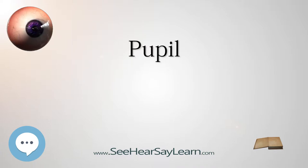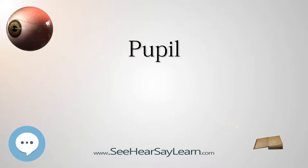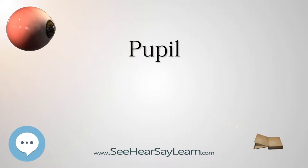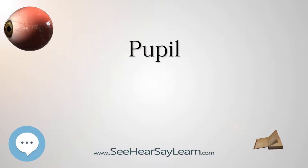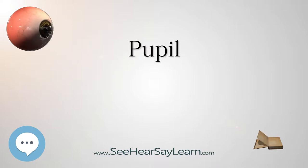In optical terms, the anatomical pupil is the eye's aperture and the iris is the aperture stop. The image of the pupil as seen from outside the eye is the entrance pupil, which does not exactly correspond to the location and size of the physical pupil because it is magnified by the cornea.